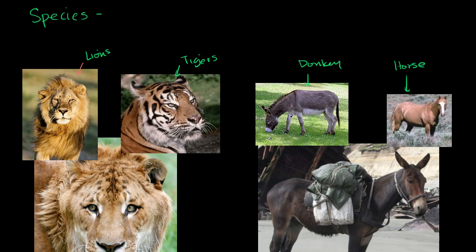That by itself is not a good enough definition for a species — things that look like each other or things that act like each other. Because there are some things that could be very different, at least in how they look or act, but are actually closely related. And then we can see things that look very similar, that have similar structures or similar behavior — like bats and birds — but they're actually very, very distantly related. So we need a more exact definition for species than just things that look or act like each other.